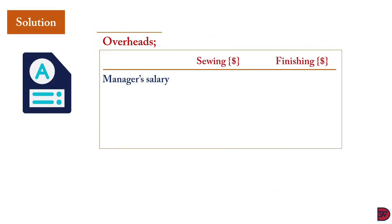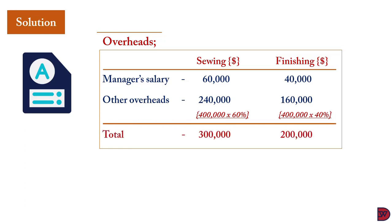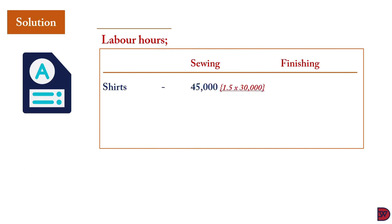In the workings: for sewing and finishing, $60,000 is directly allocated to sewing and $40,000 to finishing as managers' salaries. The remaining $400,000 is apportioned 60% to sewing = $240,000 and 40% to finishing = $160,000. Total overheads: sewing = $300,000; finishing = $200,000. To determine labor hours for sewing: shirts contribute 1.5 hours × 30,000 = 45,000 hours; finishing for shirts is 0.5 × 30,000 = 15,000 hours.